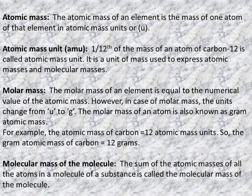Definition of atomic mass: the atomic mass of an element is the mass of one atom of that element in atomic mass unit (u). One atomic mass unit (AMU) is 1/12th of the mass of an atom of carbon-12. It is the unit used to express atomic and molecular masses.